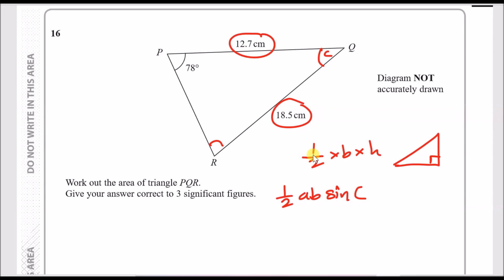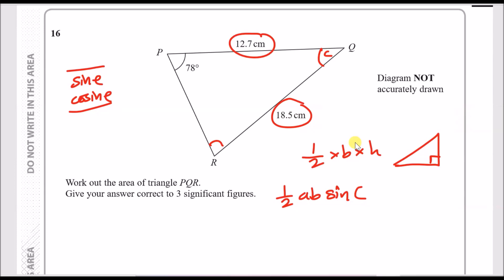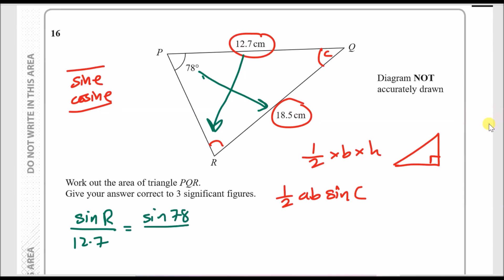Before finding the area, we need to find angle Q. For any triangle, we can use either the sine rule or cosine rule — memorize these formulas. We can use the sine rule since we have a matching pair of length and angle: 78 degrees is opposite 18.5, and 12.7 is opposite angle R. So sine R over 12.7 equals sine 78 over 18.5.